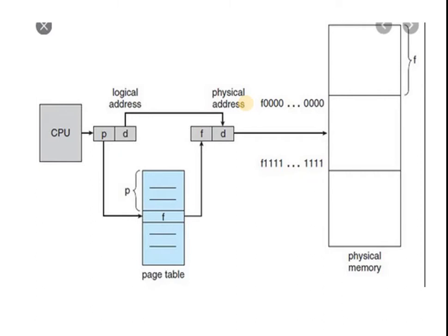The physical address space is conceptually divided into a number of fixed-size blocks called frames. Physical memory is divided into a number of fixed-size holes, each called a frame. Similarly, the logical address space is also divided into fixed-size blocks called pages. So, physical address is divided into fixed-size blocks called frames, and logical address is divided into fixed-size blocks called pages.